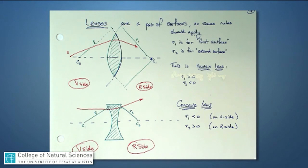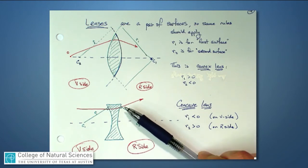And since C1 is on the V side, R1 is negative. That's the exact opposite of our previous case. Since C2 is on the real side, or the R side, R2 is a positive number.